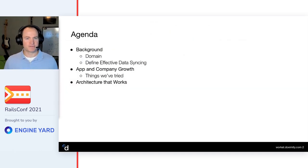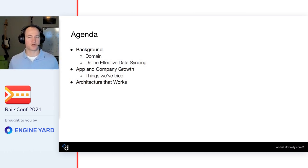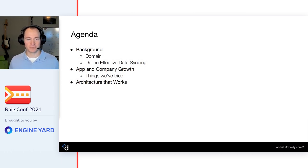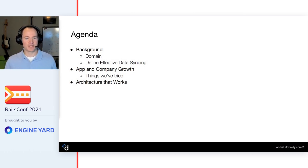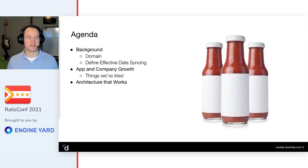I'm going to start by talking about the background, the domain, a little bit about Doximity. Then we'll define explicitly what we mean by effective data syncing. After that, we'll move into the application and company growth we experienced and some of the things we tried along the way. And finally, we'll end up on what I call our secret sauce - the architecture that has worked for us over the last several years and has enabled billions of effective data syncs in our system.